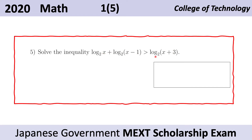Those are the first constraints that we need to take note of. Then we have to simplify the inequality such that we can eliminate the logarithmic functions, and we will be left with a solution in terms of x.